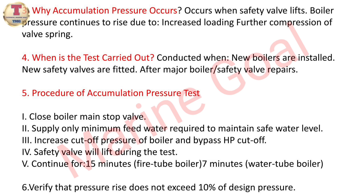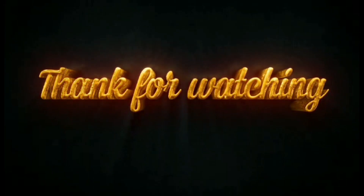Step two — supply only the minimum feed water required to maintain a safe water level. Step three — increase the cutoff pressure of the boiler and bypass the HP cutoff so the safety valve will lift during the test. Step four — continue for 15 minutes for fire tube boilers or 7 minutes for water tube boilers. Step five — verify that pressure rise does not exceed 10 percent of design pressure.